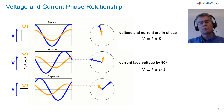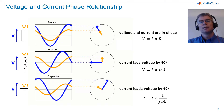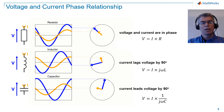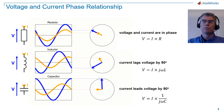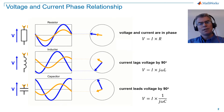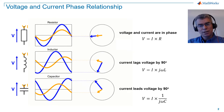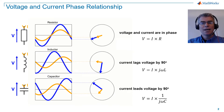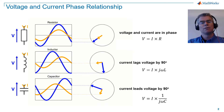For a capacitor, current leads voltage by 90 degrees, and the relationship between voltage and current is described by V equals I times 1 over J omega C, where C is the capacitance. The 90 degrees phase lead is clearly seen in the vector representation, where the current vector is 90 degrees ahead of the voltage vector relative to the direction of rotation.